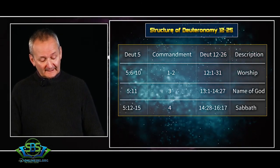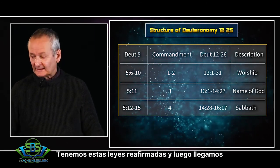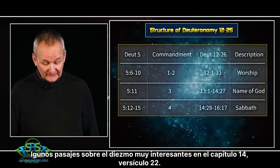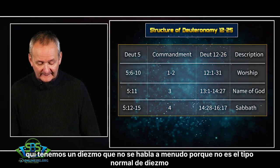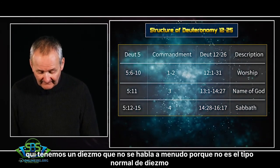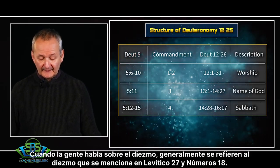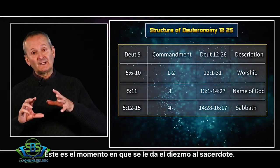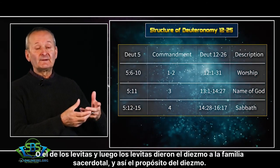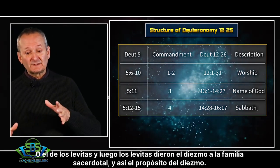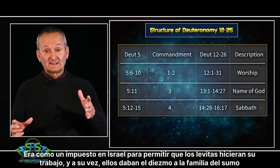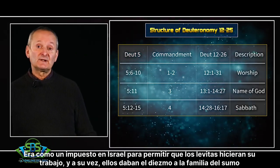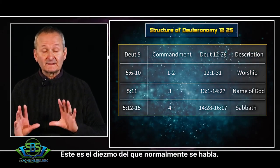We have these laws restated, and then we come to some very interesting tithing passages. In chapter 14 verse 22, we have a tithe that is not often spoken about because it's not the normal kind of tithe. When people talk about tithing, they usually refer to the tithe mentioned in Leviticus 27 and Numbers 18 — when the tithe is given to the priests or Levites, and then the Levites tithe to the high priestly family. The purpose of this tithe was like a tax in Israel to enable the Levites to do their work, and they in turn tithed to the high priest so the high priestly family could do their work.